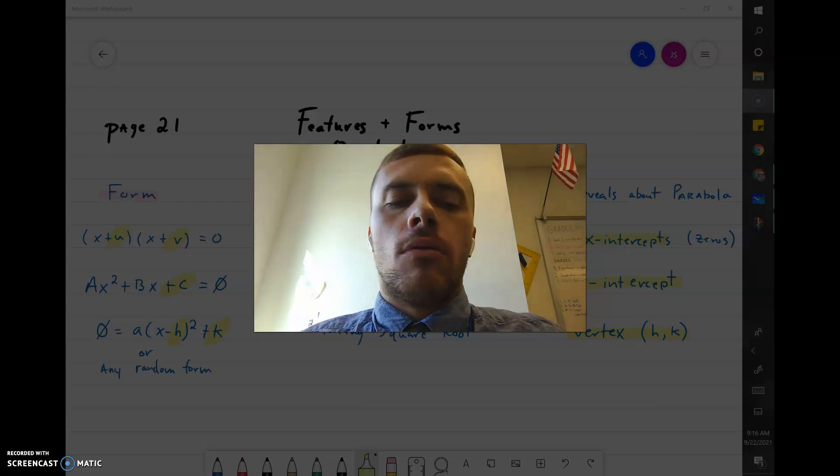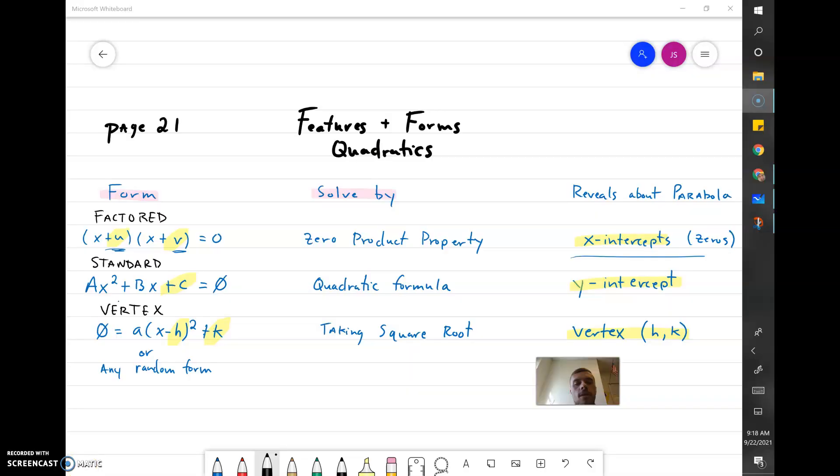We've learned about three forms and in each of these three forms, each form quickly reveals something about the parabola without having to graph it.